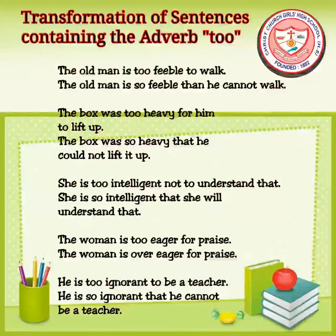Now let's move on to the rules of transformation of sentences containing the adverb 'too.' The form of a sentence containing 'too' can be changed. For example: 'The old man is too feeble to walk' becomes 'The old man is so feeble that he cannot walk.'